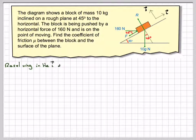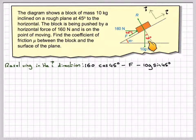So resolving in the i direction, in this direction, we've got 160 cos 45, this component of this force here, minus the frictional force F, is equal to minus the slope here, which is going to be 10g sin 45, this force here, is equal to 0. We'll call that equation 1.